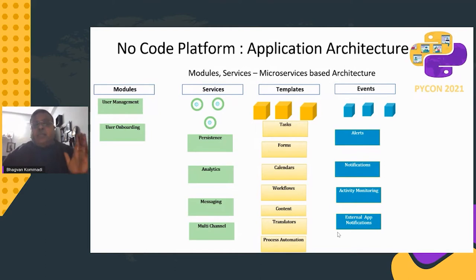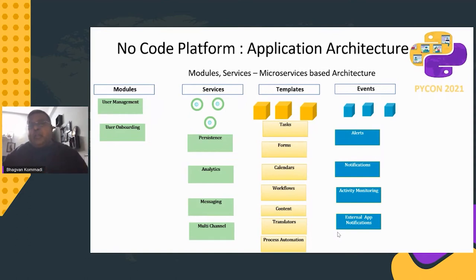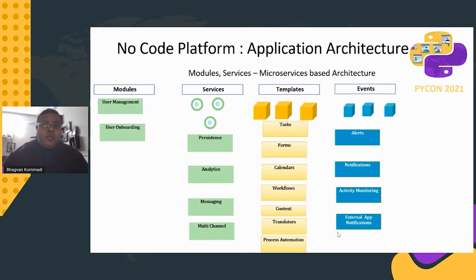Moving to the no-code platform: you have modules, services, templates, and events. Beyond persistence, you add analytics, messaging, multi-channel services, and templates for tasks — forms, calendars, date pickers, workflows, content translators, process automation. Events go beyond CRUD to include notifications, alerts, activity monitoring, and external app notifications.